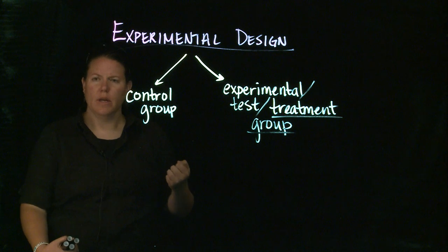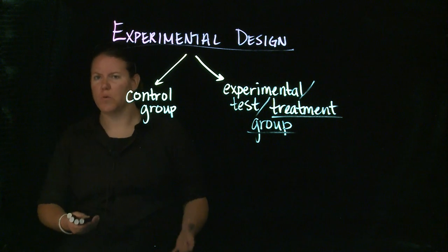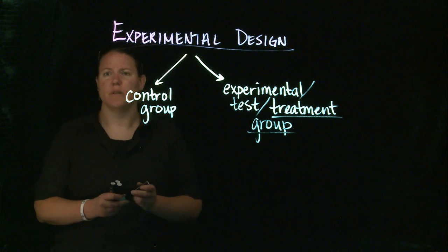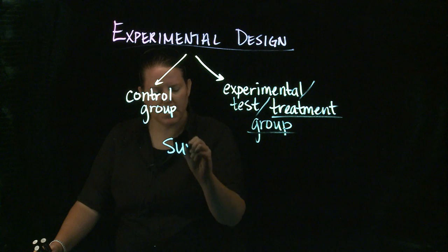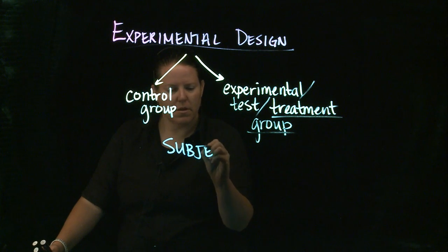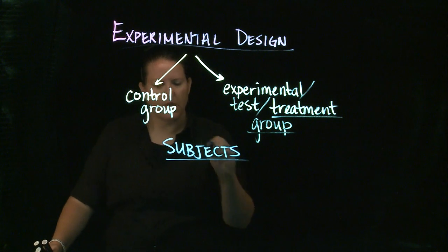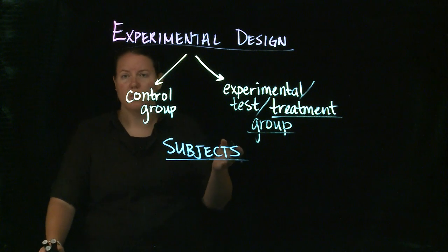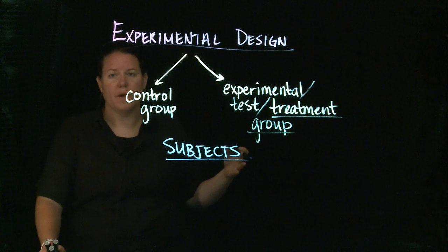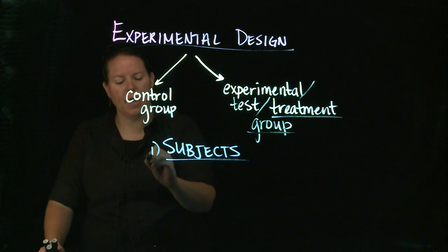In terms of thinking about experimental design, the most basic questions that we have to ask ourselves are basically three questions. We need to know who the subjects are. Who are we picking or what are we picking as the subjects and why them? So we need to think about that.